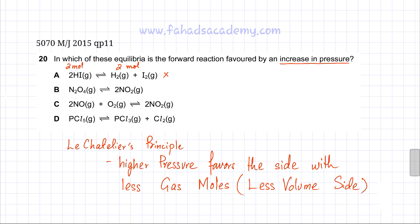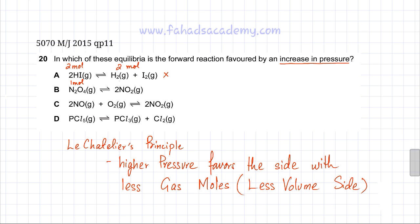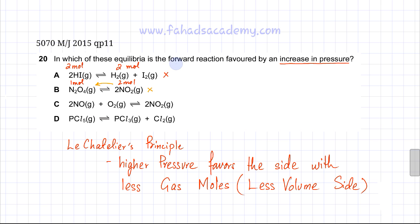Looking at option B, the reactants have just 1 mole, while the products have 2 moles of NO2. Increasing pressure favors the side with fewer gas moles, so in this case the equilibrium would favor the reactants — it's going to shift backwards. This is also incorrect because the question asks which reaction favors the forward reaction when pressure is increased.